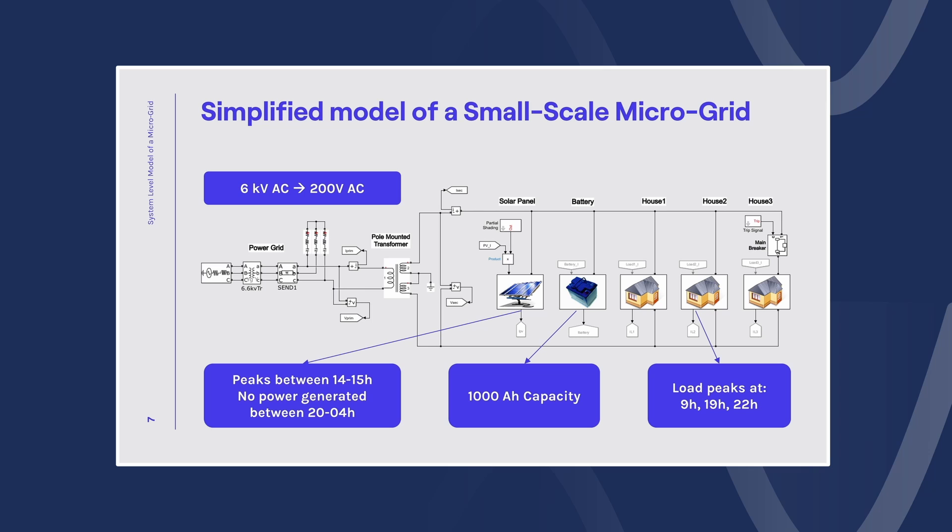We have one consumption in the morning and then we have two extra consumption peaks during the night. Finally, the microgrid array is connected to the power network via a transformer which lowers the voltage of 6 kV to 200 V AC. Let's open the model now and see how our model looks like in Simulink.